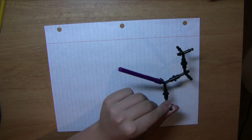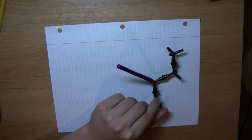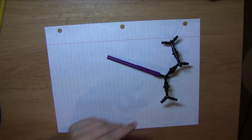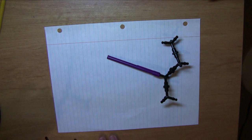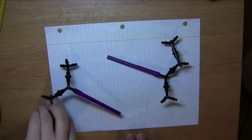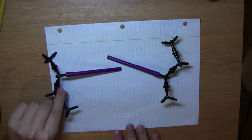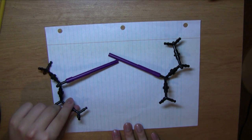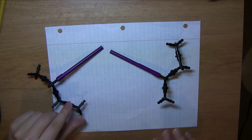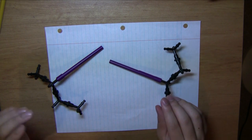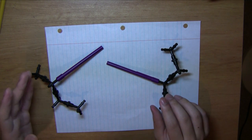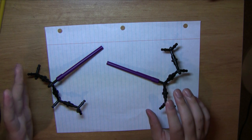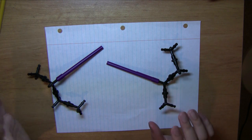Two enantiomers always have to have a different R or S. Two enantiomers cannot both be S — that would mean they're simply the same molecule. So we always know that in enantiomer pairs, one always has to be S and one always has to be R.